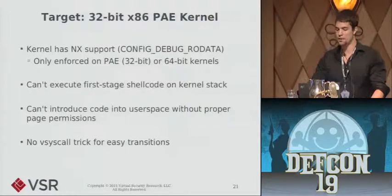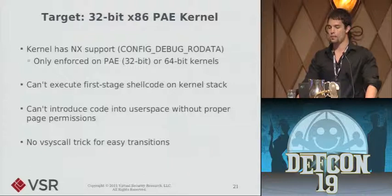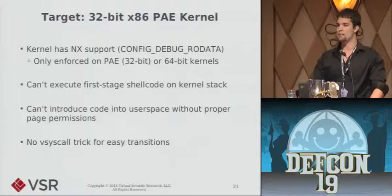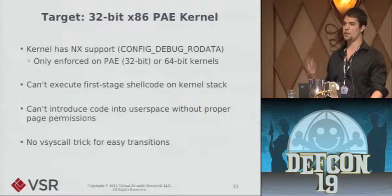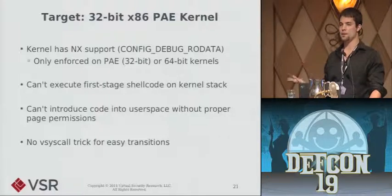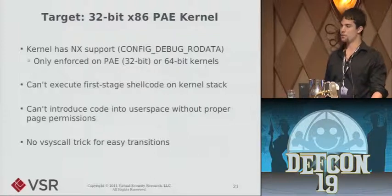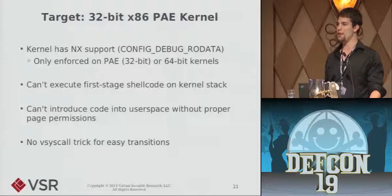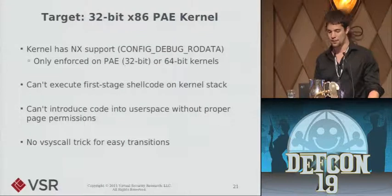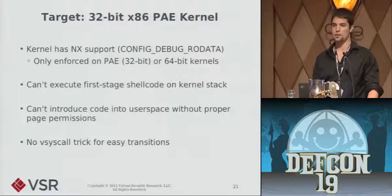The target system I'm going after: I'm using a 32-bit x86 Physical Address Extension kernel. The PAE component is significant because it means the kernel now has NX support — the kernel stacks, kernel heap, and kernel data are all now non-executable. So we can't just execute code on the kernel stack immediately without doing something first. These kernels also have user-land NX protection, so if we're going to introduce code into a user process we need to do so in a way that honors page permissions. And because we're on a 32-bit machine, we can't leverage Sgrakkyu's trick that was specific to AMD64 to make that transition from interrupt context to user-land.